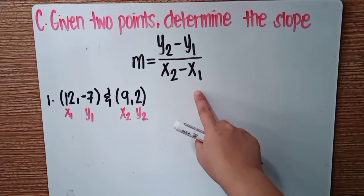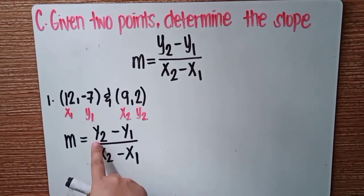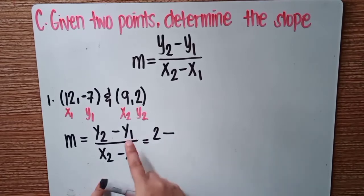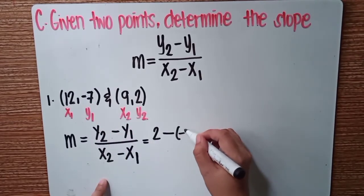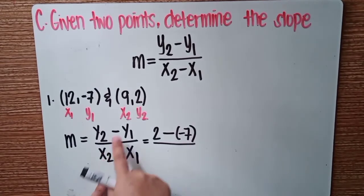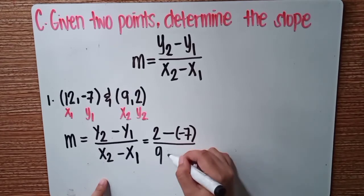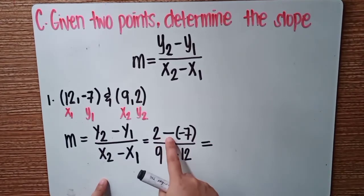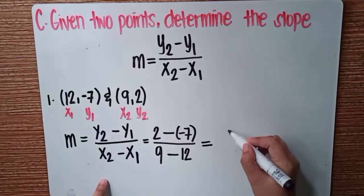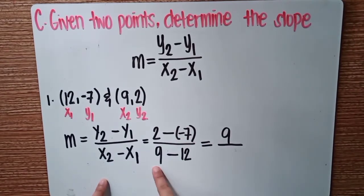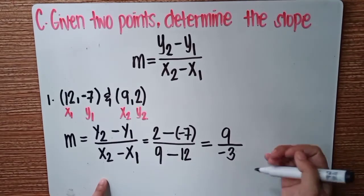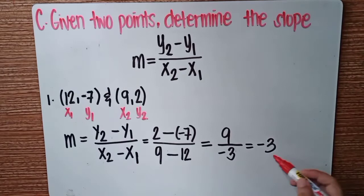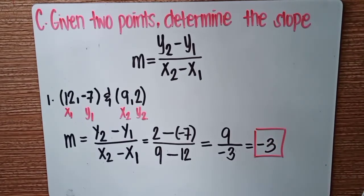Copy the formula and substitute the values. Y sub 2 is equal to 2, minus Y sub 1 which is negative 7, over X sub 2 which is 9, minus X sub 1 which is 12. Simplify: 2 minus negative 7 is positive 9. Over 9 minus 12 is negative 3. And 9 divided by negative 3 equals negative 3. The slope is equal to negative 3.